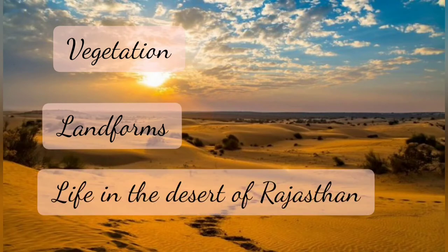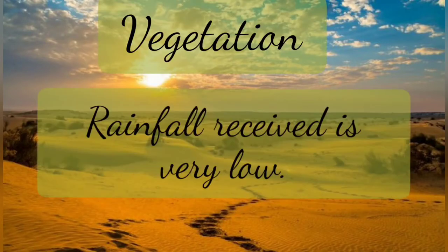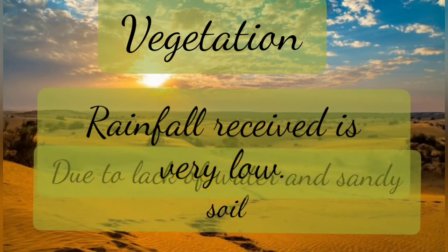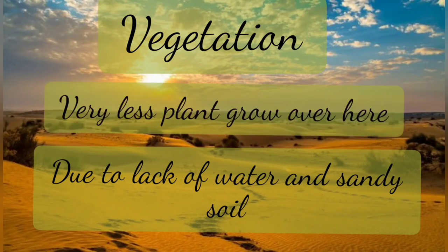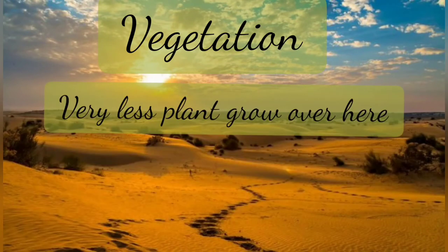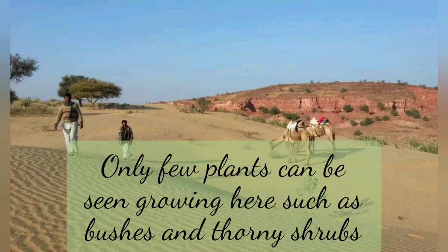Let's first start with vegetation. Since there is very little rainfall received here in desert areas, the land is not fertile and there is no water. So the plants and vegetation will not grow properly. That is why in this region you can only see a few plants growing, and also a few scattered bushes and thorny shrubs — like cactus, which you must have seen.